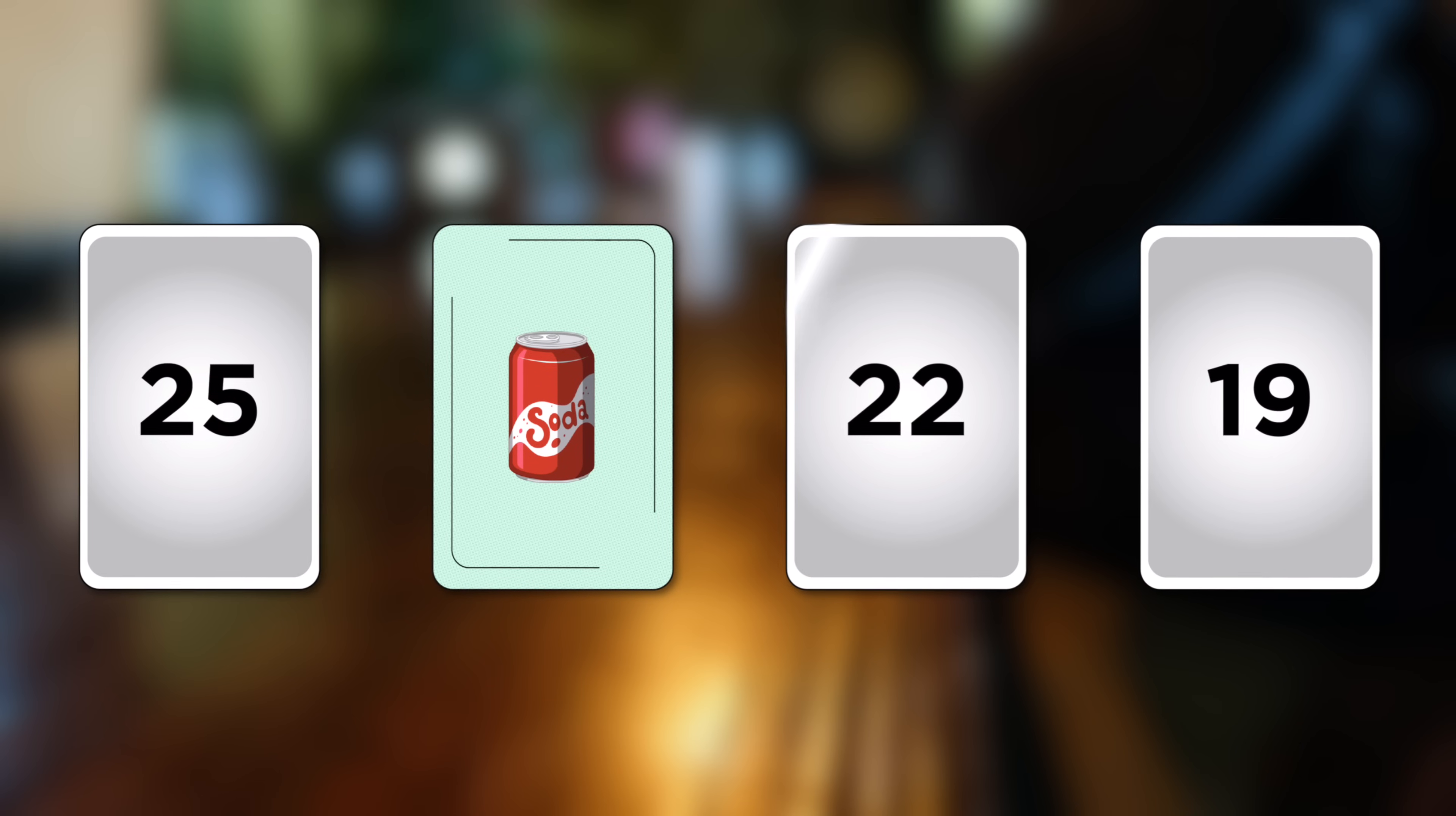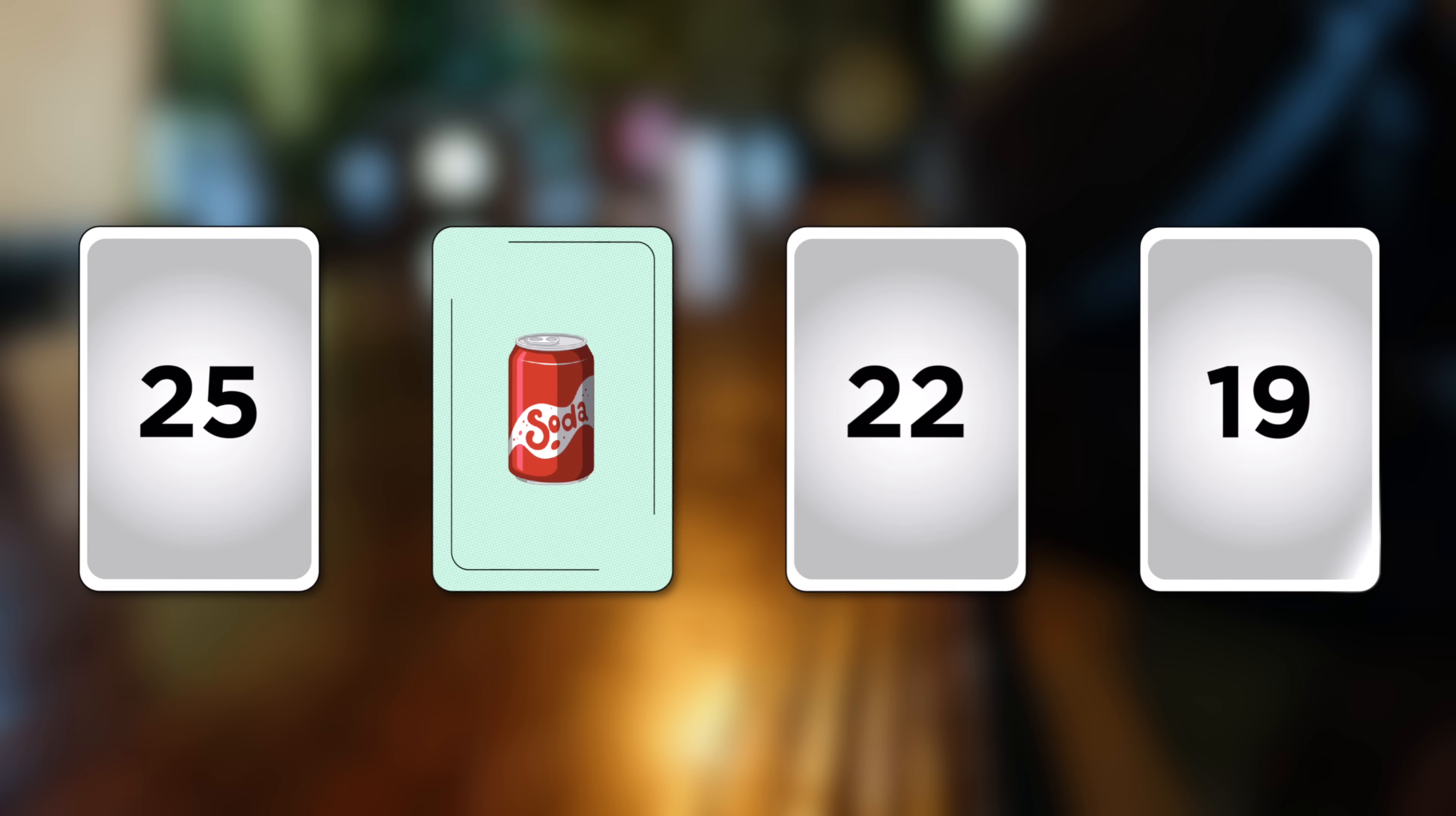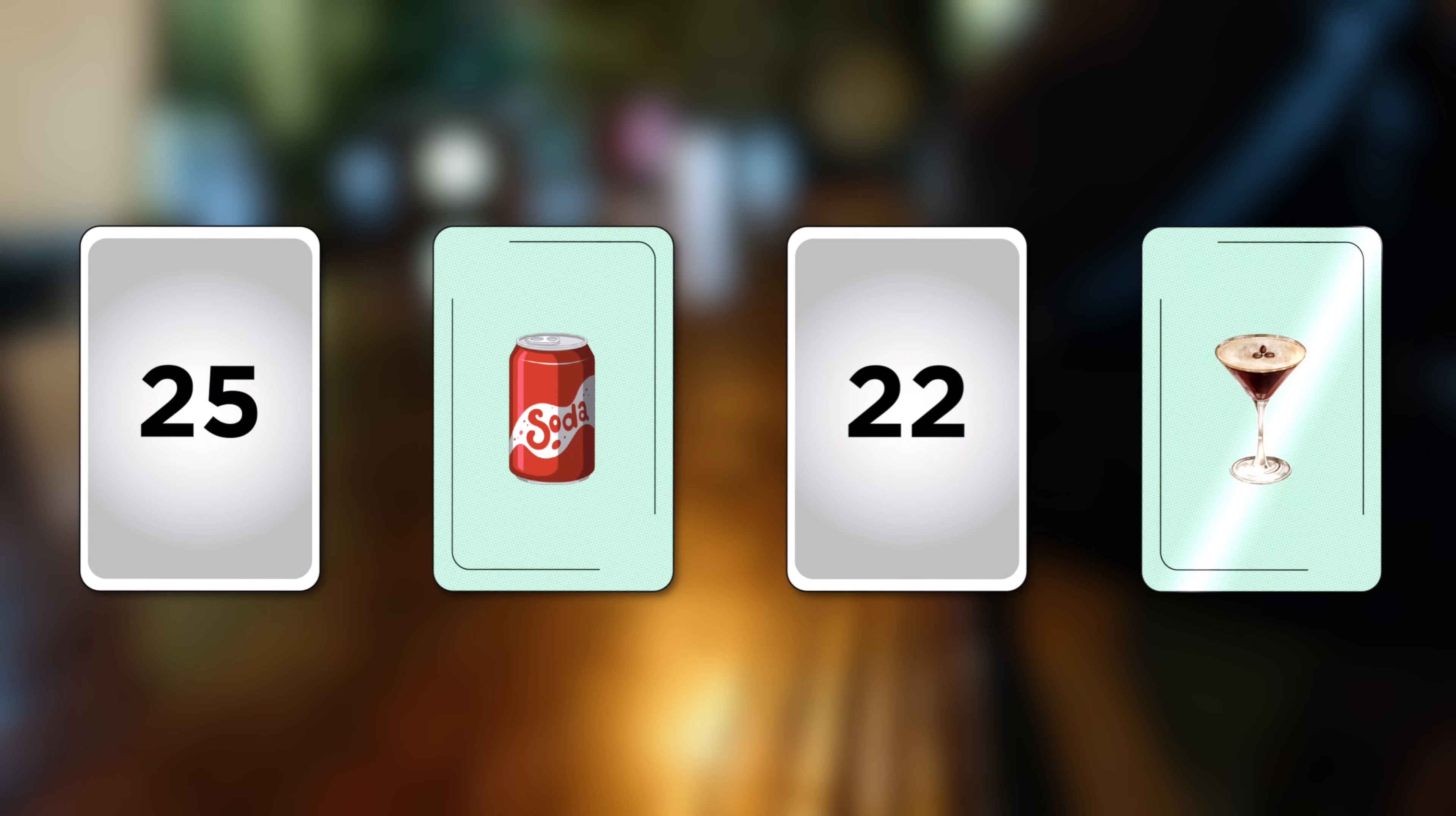Similarly, you don't need to check the 22-year-old's drink because they are of legal drinking age, regardless of what they're drinking. However, you should flip over the card showing the person who is 19 years old. If that card reveals an alcoholic drink on the other side, then the bar is breaking the law.